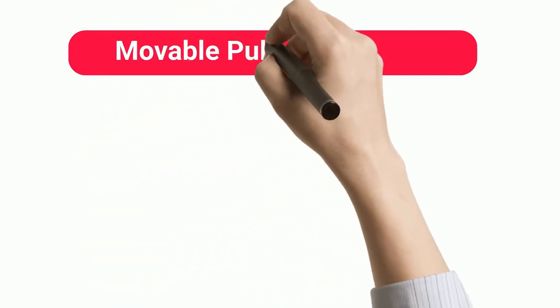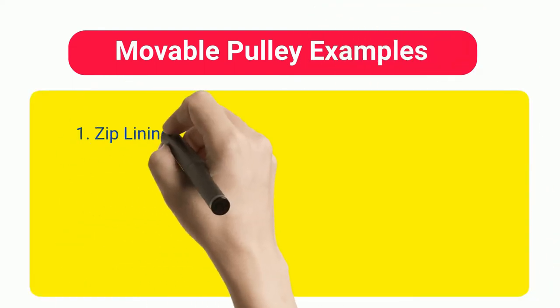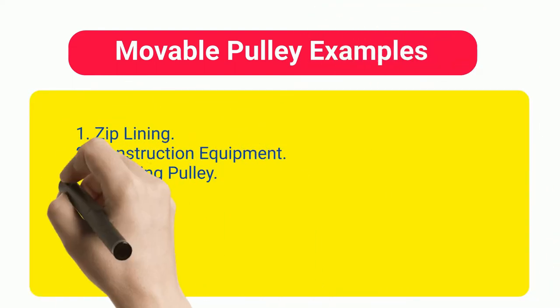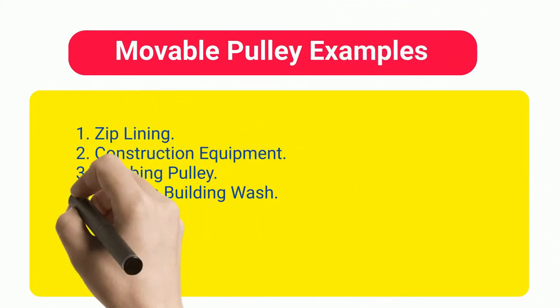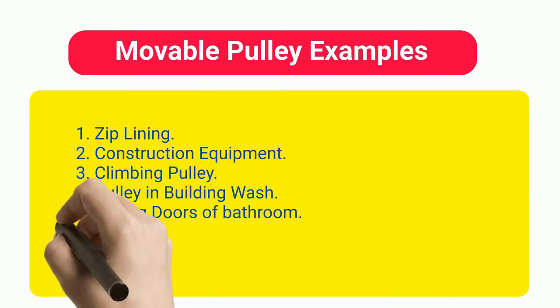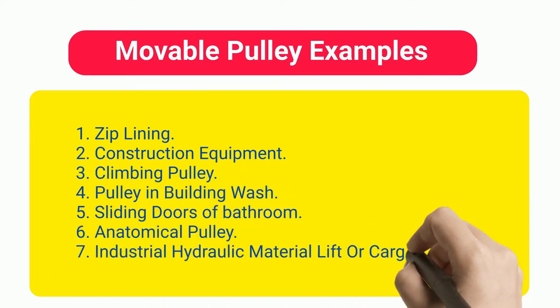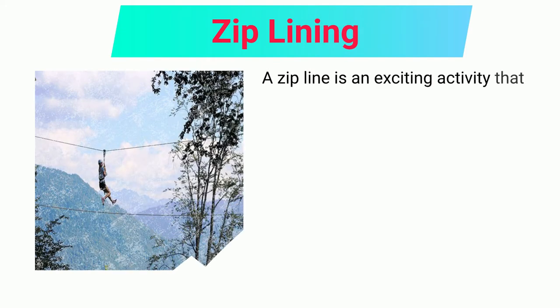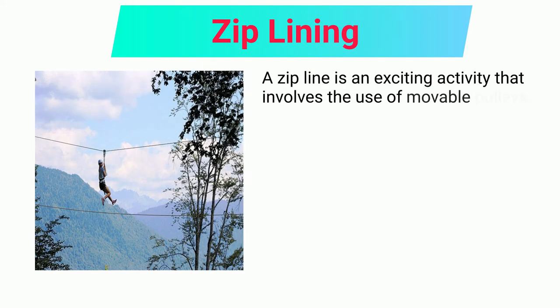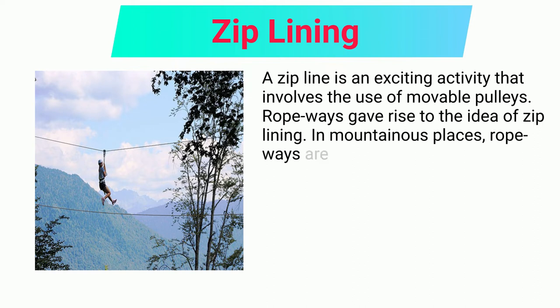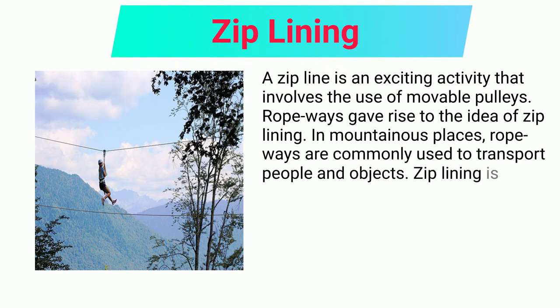Movable Pulley Examples. Zip Lining. A zip line is an exciting activity that involves the use of movable pulleys. Ropeways gave rise to the idea of zip lining.